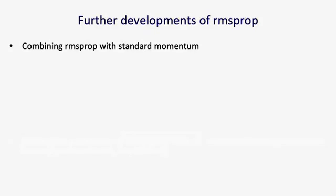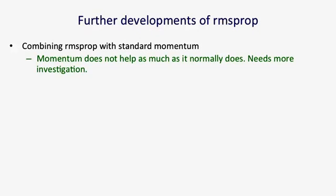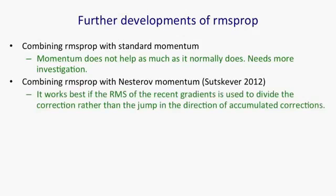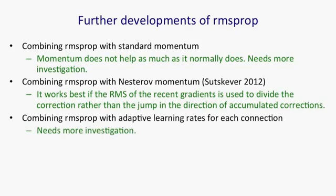There are many further developments one could make for RMSProp. You could combine it with standard momentum, though my experiments so far suggest that doesn't help as much as momentum normally does, and that needs more investigation. You could combine RMSProp with Nesterov momentum, where you first make the jump and then make a correction. Ilya Sutskever has tried that recently and got good results. He's discovered that it works best if the RMS of the recent gradients is used to divide the correction term rather than the large jump in the direction of accumulated corrections. You could also combine RMSProp with adaptive learning rates on each connection, which would make it much more like RProp, but that needs a lot more investigation.